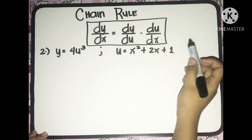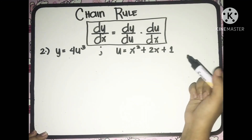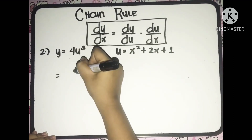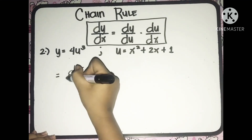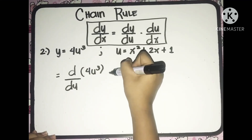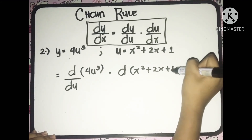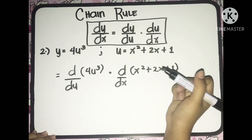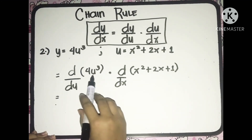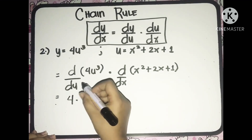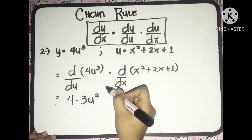Now, with the second example, given y is equal to 4u cubed and u which is equal to x squared plus 2x plus 1. Applying the formula in chain rule, we'll have the derivative of y which is 4u cubed with respect to u, multiplied to the derivative of u which is equal to x squared plus 2x plus 1 with respect to x. Applying the rules in differentiation, so 4u cubed gives us 4 multiplied to 3u raised to 2, so we'll have 2.